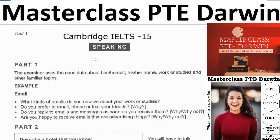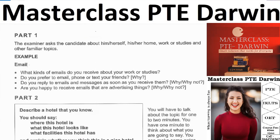They then start asking different questions on different topics. The topics are formatted — the examiner will not ask any random question; only questions relevant to what is written in the booklet. For example, one topic is about email. A question might be: 'What kind of emails do you receive about your work or studies?' In Part 1, your answer should be one to two sentences, maybe three — no need to answer more than three sentences.